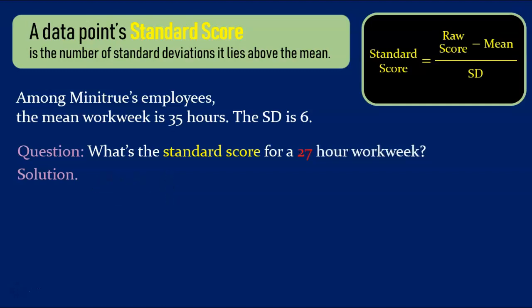One last one. What's the standard score for a 27-hour workweek? Someone who works 27 hours works less than the mean number of hours, so we should expect this standard score to be negative. The raw score of 27 minus the mean of 35 does indeed give us a negative number, and when we divide by the standard deviation of 6, we get negative 1 and a third. That is, the standard score corresponding to a 27-hour workweek is about negative 1.33.